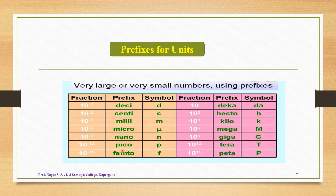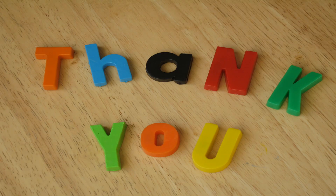In this lecture, we studied the different important basic points needed for chapter number two. We started with an introduction to the key points of the chapter, then studied the SI unit system and the SI derived unit system, the seven fundamental base units and their symbols, the derived units from those base units, and finally the prefixes for units. The remaining portion of this chapter will be covered in the next lecture. Thank you so much.